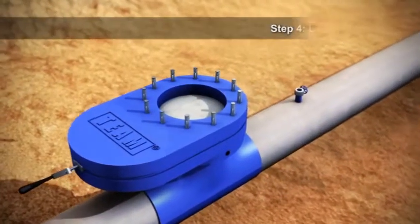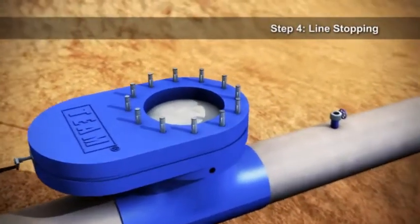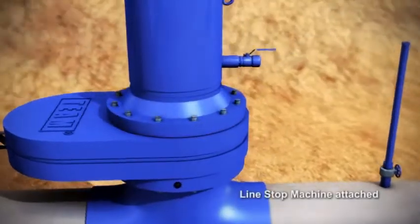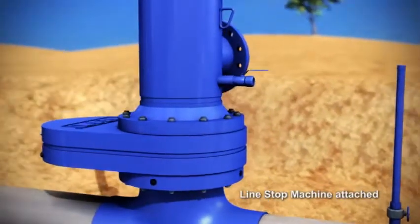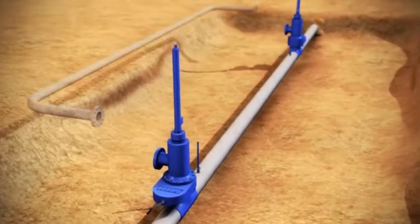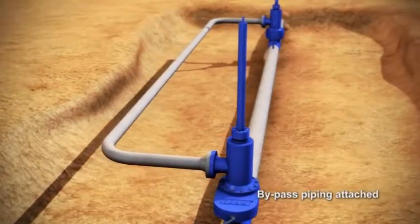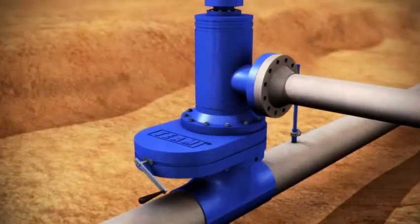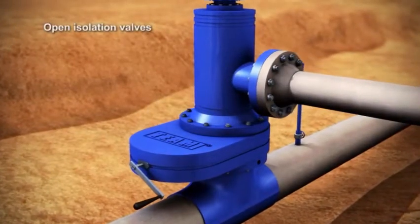Step 4: Line Stopping. The line stop equipment is installed onto the isolation valves in the proper orientation to allow for bypass and depressurization between the line stops. The temporary bypass piping is connected to the line stop housings. Proper purging and packing of the line stop housing and bypass piping is accomplished.